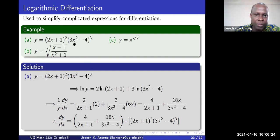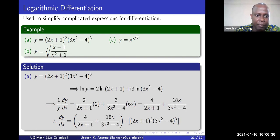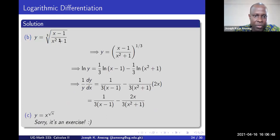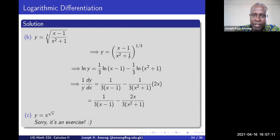Of course, you could also do this using the product rule — this example was just to illustrate logarithmic differentiation. There are others that are much more difficult to do with either the product or the quotient rule. Let's look at example B. B can be written as an expression raised to the power 1/3. To simplify it, you take the ln of both sides. When you do, ln(y) equals this power brought down times the ln of the quotient — which is the difference of ln of the numerator minus ln of the denominator.